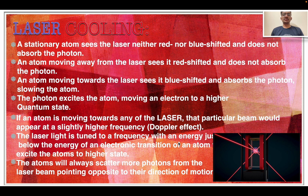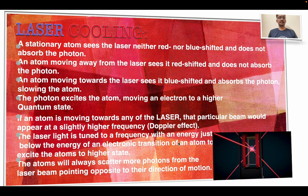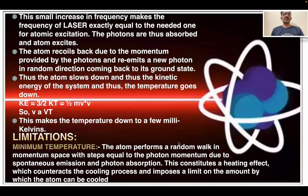The laser light is tuned to a frequency with energy just below the energy of an electronic transition of the atom, and the photon excites the atom to a higher state. The atoms will always scatter more photons from the laser beam pointing opposite to the direction of motion. This small increase in frequency makes the laser frequency exactly equal to that needed for atomic excitation. The photons are absorbed and the atom is excited; the atom recoils due to momentum provided by the photons and re-emits a new photon in a random direction, returning to its ground state. Thus the atom slows down, reducing the kinetic energy and temperature of the system.